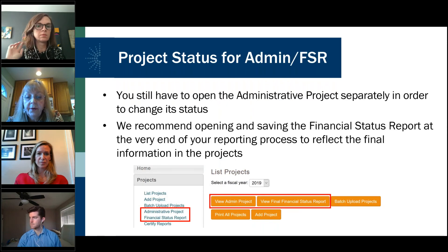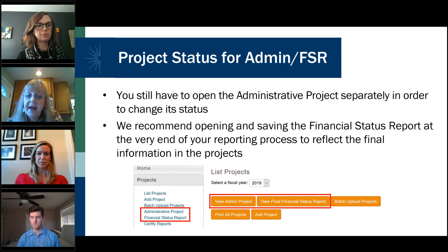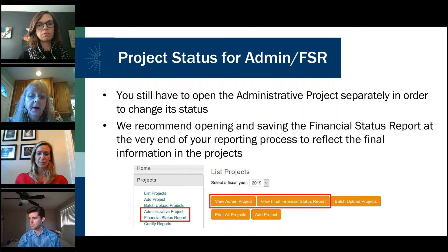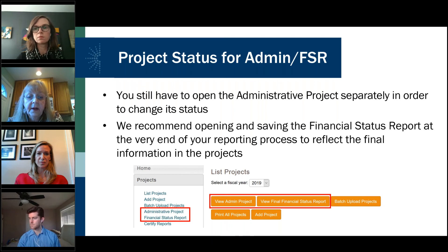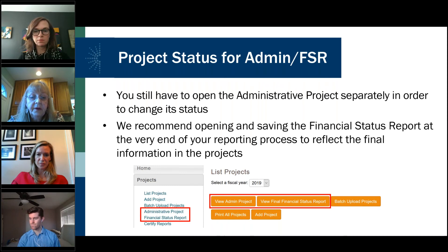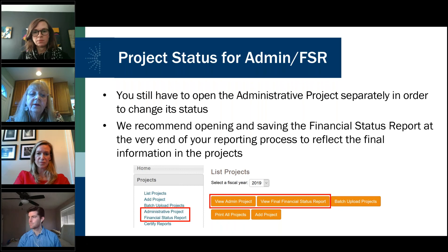There are two other places where you have to put in project information: your admin project for your 4% admin report, and your financial status report. Those are under projects — you'll see administrative project and financial status listed there. Click on either box and it'll take you to the one you can fill out.